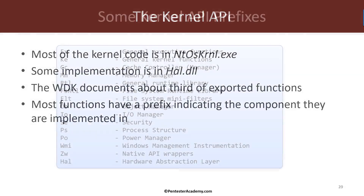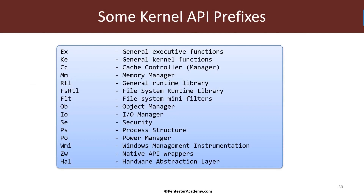Here are some of the more common prefixes you will find in the kernel API. We'll have EX and KE, which are generic executive and kernel functions that don't belong to any specific category. We'll have MM for the memory management functions. We have RTL, which is for runtime library generic functions that we can use for various operations. We'll see a few examples throughout the course. We have the OB prefix for object management, IO for the IO manager APIs, and PS for process and thread APIs.